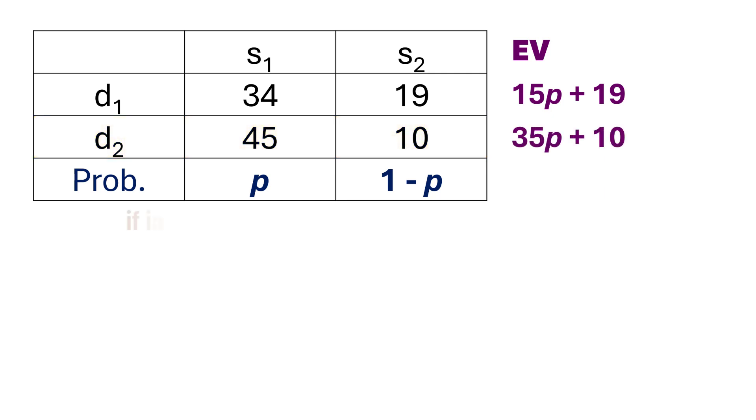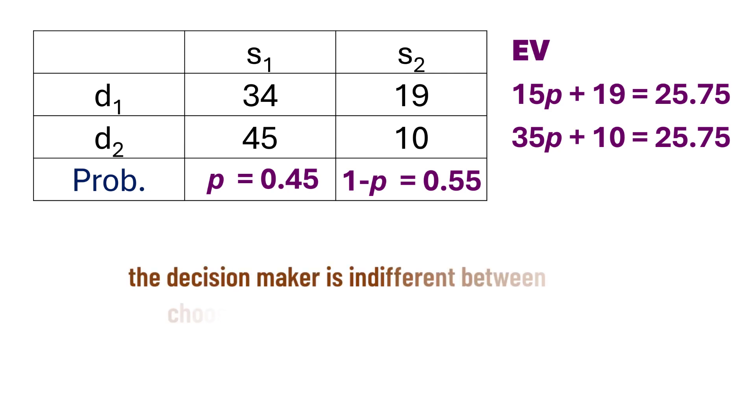If the decision maker is indifferent between D1 and D2, then the expected value of D1 should be equal to the expected value of D2. On solving for P, we have 9 equals 20P so that P equals 0.45. That is, when the probabilities of the states of nature are 0.45 for S1 and 0.55 for S2, the expected values are equal to 25.75 for both D1 and D2. That is, the decision maker is indifferent between choosing D1 and D2 when P equals 0.45.